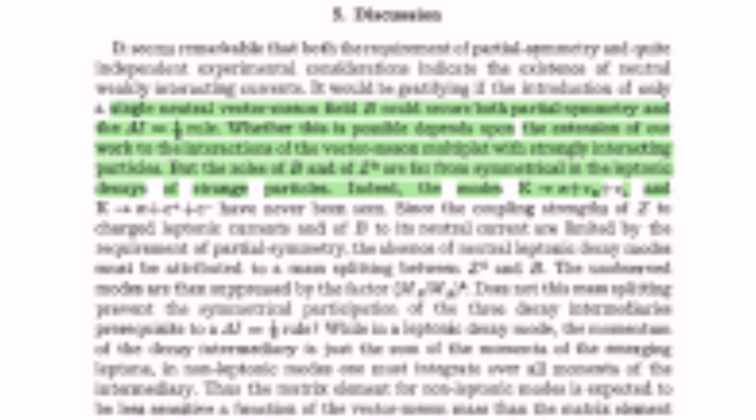Glashow's work was foundational for electroweak theory and was directly built upon by Salam and Weinberg, who incorporated the Higgs mechanism to explain how particles acquire mass, leading to the complete formulation of the electroweak theory. Comparing Glashow's paper with Salam and Ward's 1959 paper, Salam and Ward's paper was more about establishing a theoretical foundation and exploring the potential for unifying weak and electromagnetic interactions, whereas Glashow's paper presented a specific, testable model.